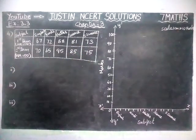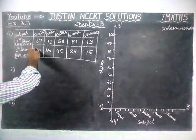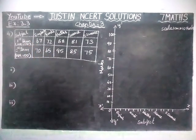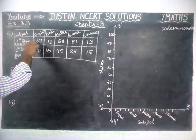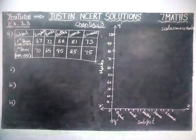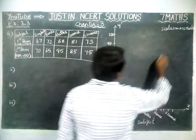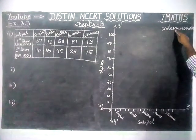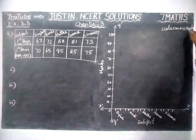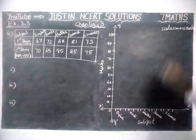The use of a double bar graph is that we are going to give 2 types of data in 1 bar graph. That's why this is called a double bar graph. Now, we are going to take scale: 1 cm equal to 10 marks.